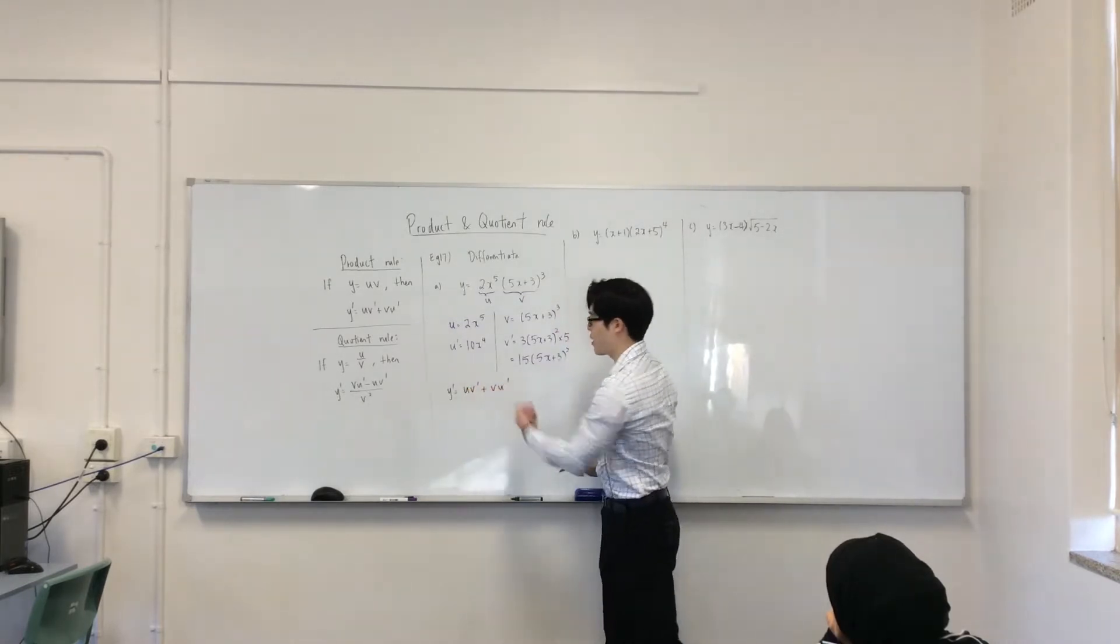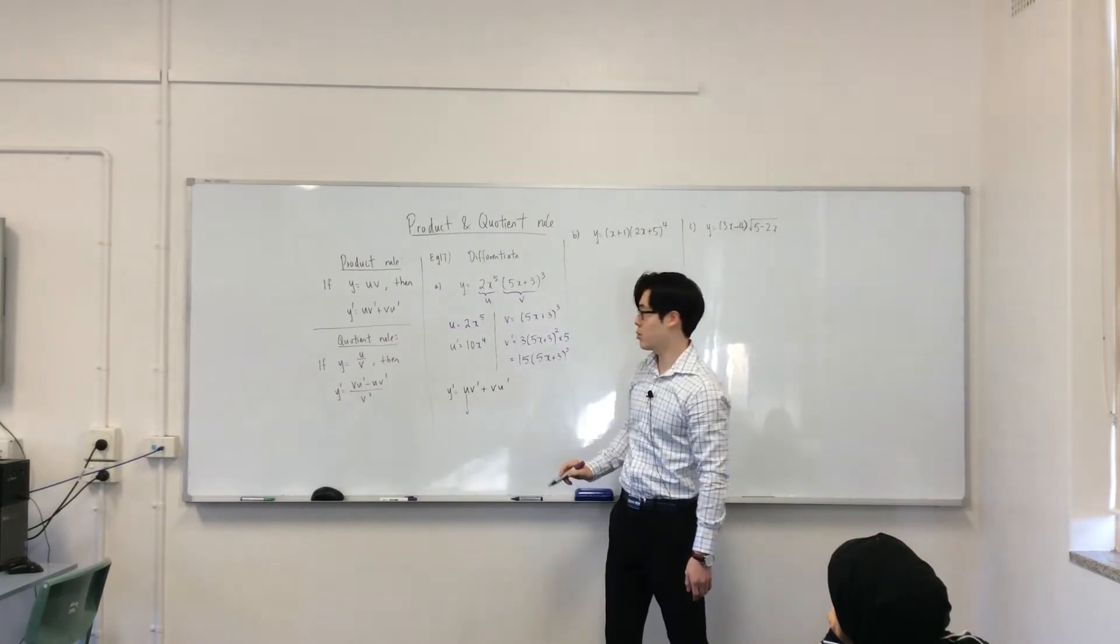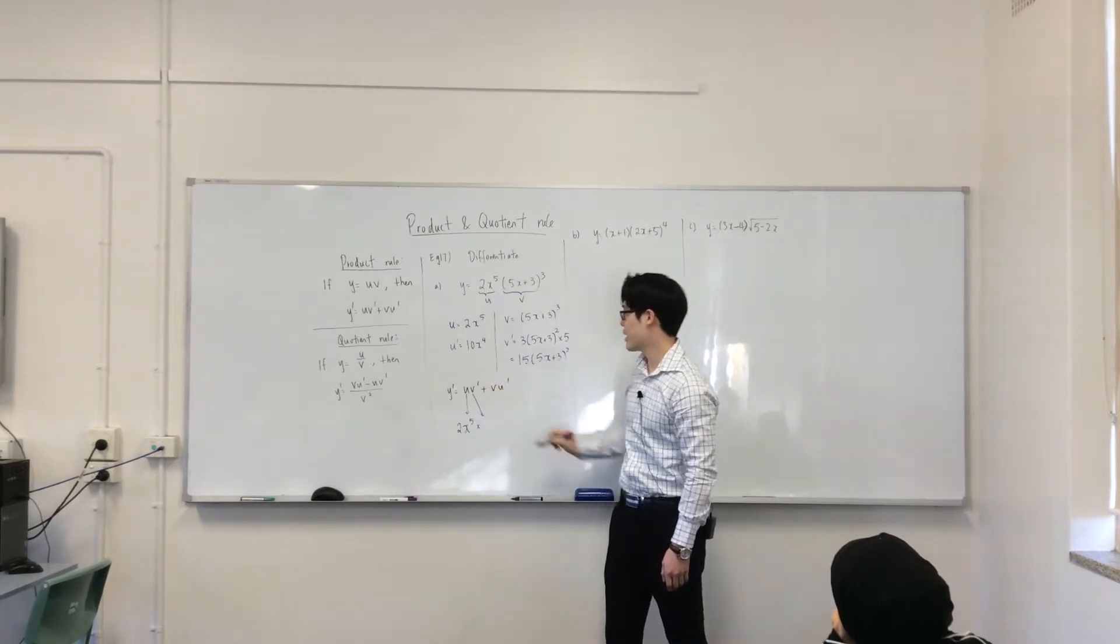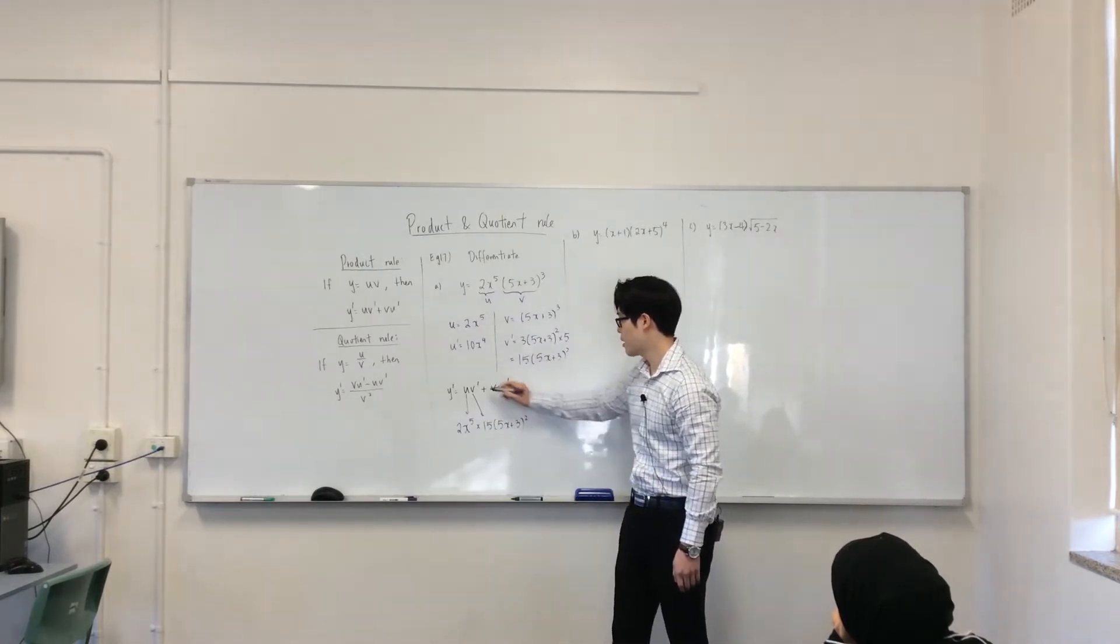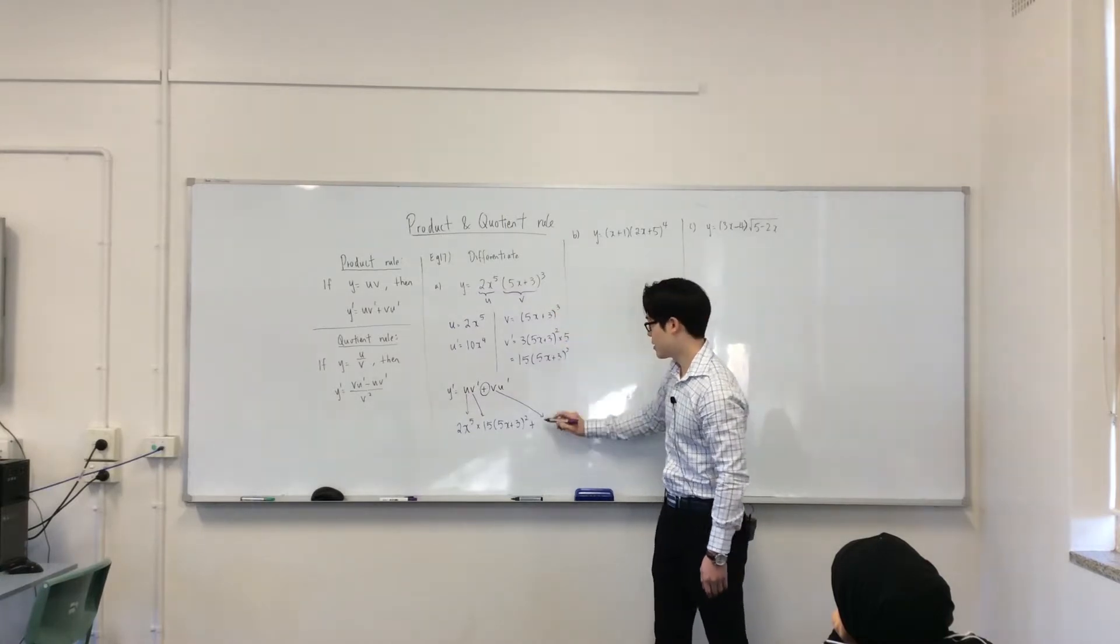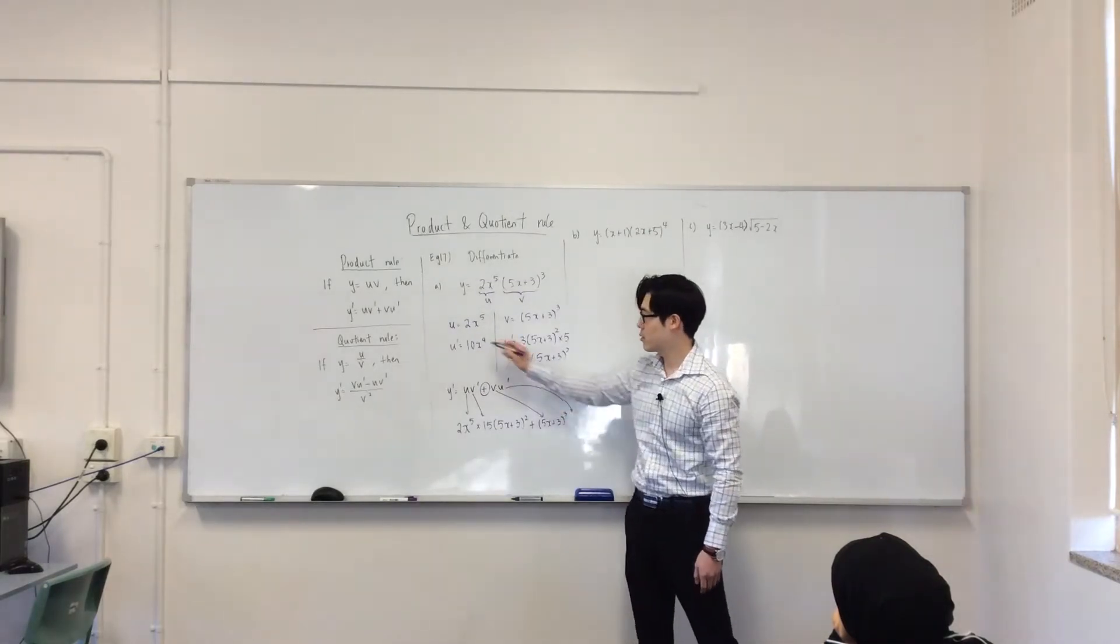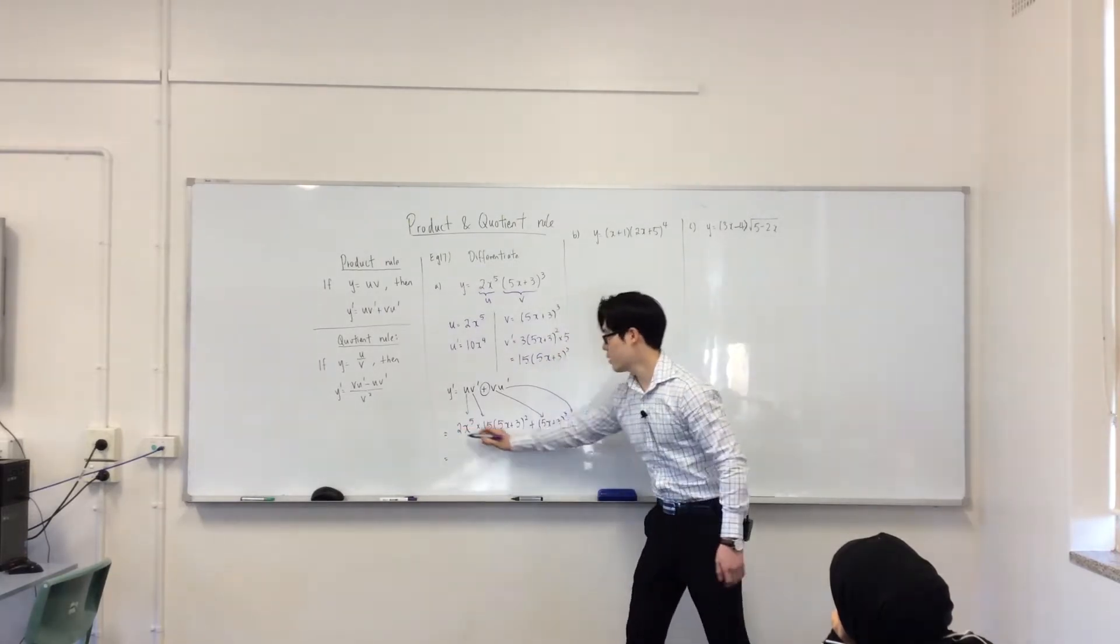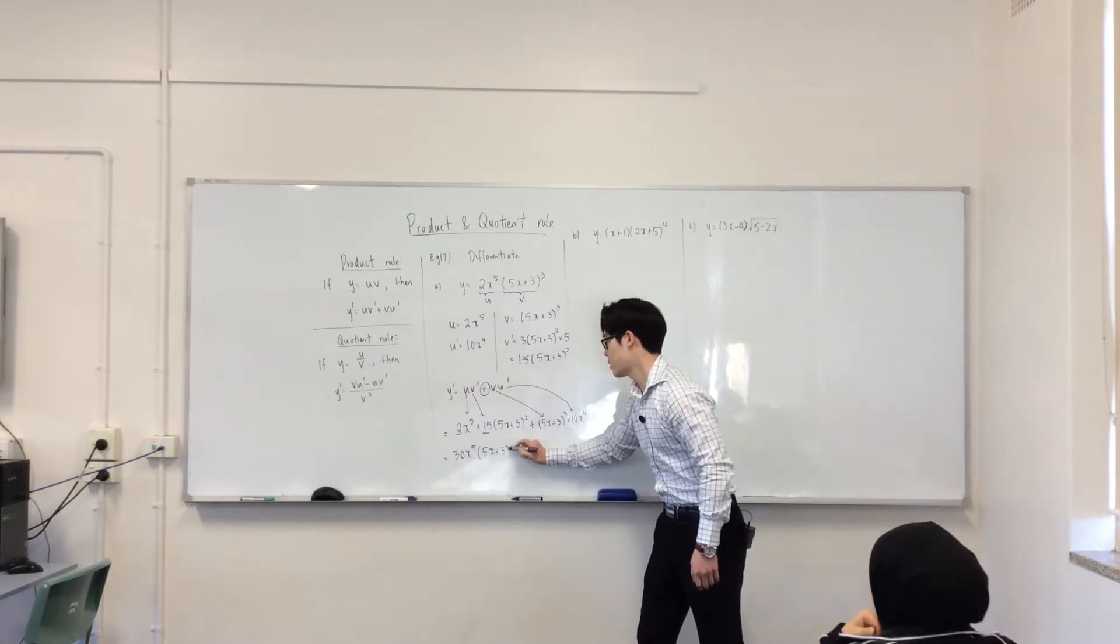Once you've set this up, let me write down the rule again. Y dash equals U V dash plus V U dash. In the textbook they swap these around. It doesn't matter as long as you have these two in this order. So what's my U? It's just substitution. Times, what's my V dash? I'm just following the rule, nothing tricky about it. Plus, what's my V? It can get mixed up, so make sure you follow it carefully. And then, what's my U dash? Times 10x^4.